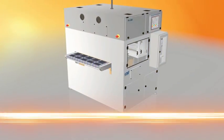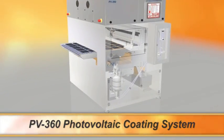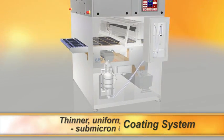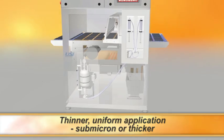The PV360 Photovoltaic Coating System by USI is the most advanced dopant coating system on the market today. It delivers a thinner, more uniform application of dopant, submicron or thicker.